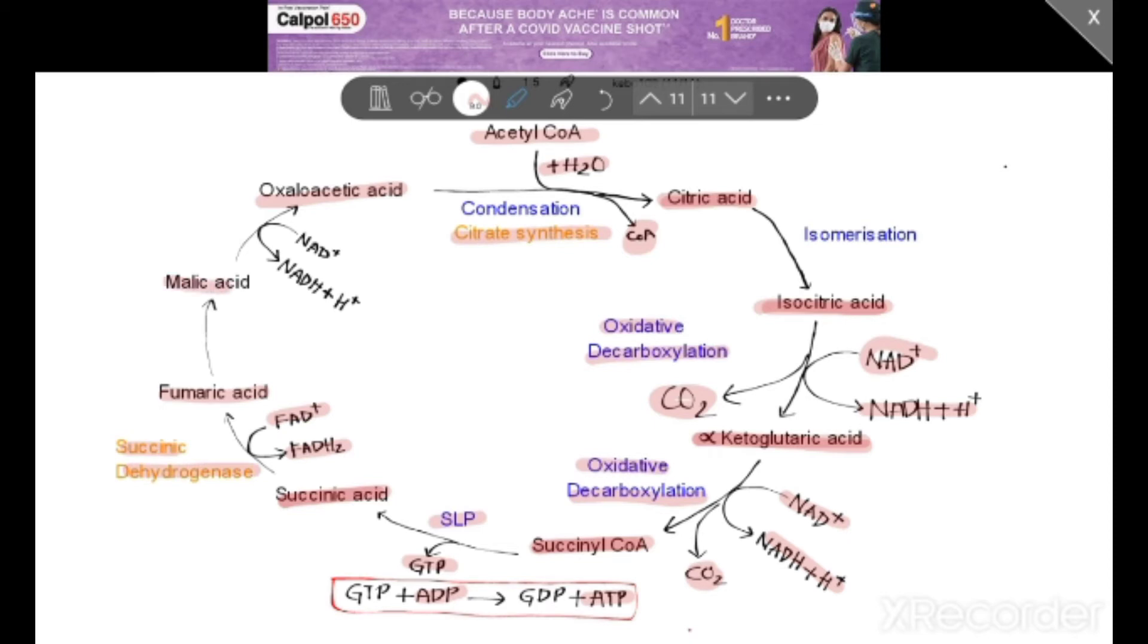Fumaric acid changes to malic acid. Malic acid changes to oxaloacetic acid. And NAD+ changes to NADH + H⁺. In this way, the cycle continues.